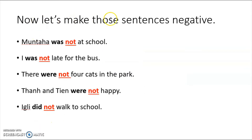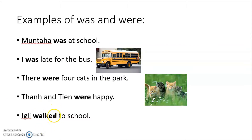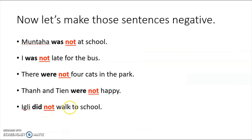Now let's make those sentences negative. Munta was not at school. I was not late for the bus. There were not four cats in the park. Tan and Chin were not happy. Notice 'not' is added. For 'walked,' we take away the -ed and say 'did not walk to school' instead.